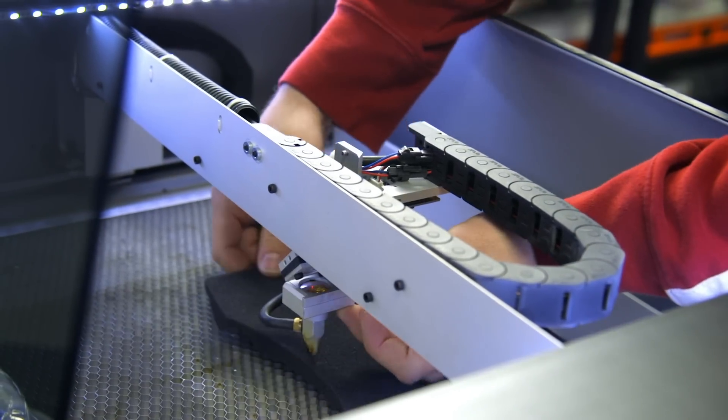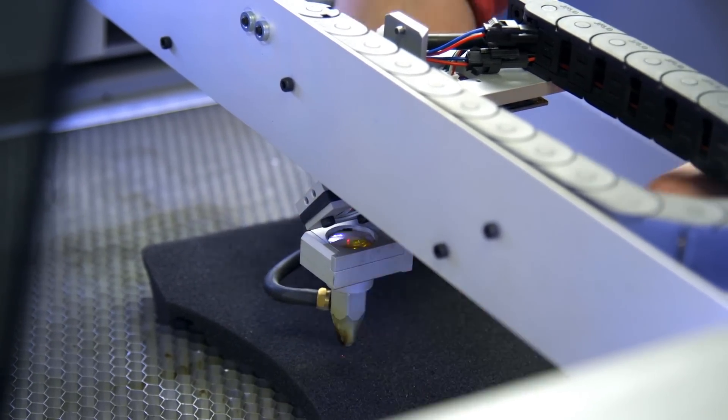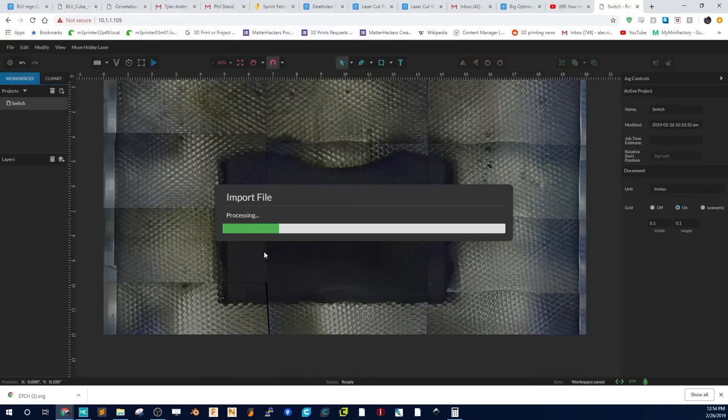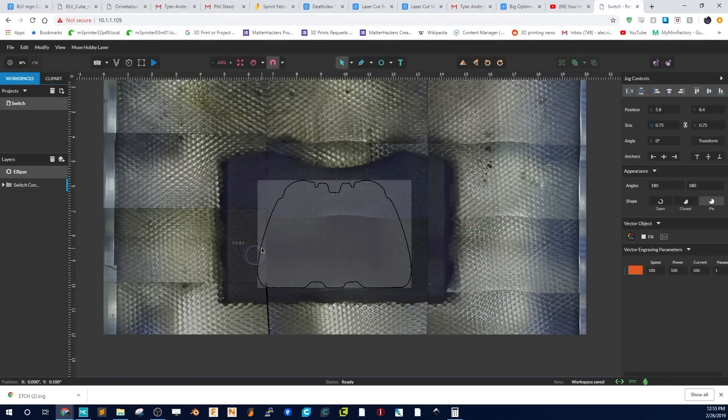I laid the foam into the Muse and did another height adjustment, with this one being just barely at the limit of what the Muse can cut through. Jumped back into Retina Engrave 3 and brought the vector file in of the Switch controller so that I had a good, easy cutout and did a little modification of the size to make sure that it was just the right fit for the Switch controller.